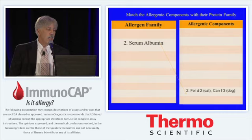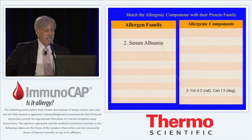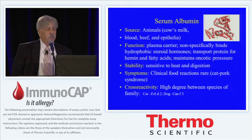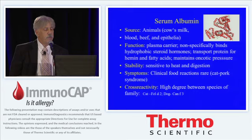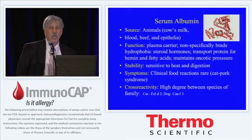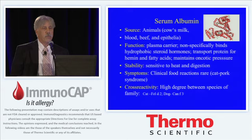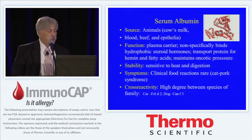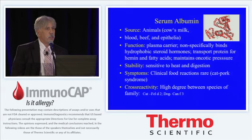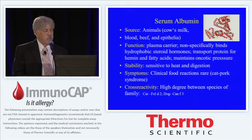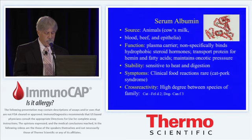The second family is the serum albumin family. The examples are Fel-D2 and CanF3. Serum albumin is primarily found in animal sources: cow's milk, blood, beef, and epithelia. It's a plasma carrier that non-specifically binds hydrophobically to steroid hormones and transports proteins, and also maintains osmotic pressure. It's sensitive to heat and digestion, so clinical reactions to albumins are pretty rare, even though we have the cat-pork syndrome that's been identified. There's a high degree of cross-reactivity among the species of this family, illustrated by cat Fel-D2 and dog CanF3.